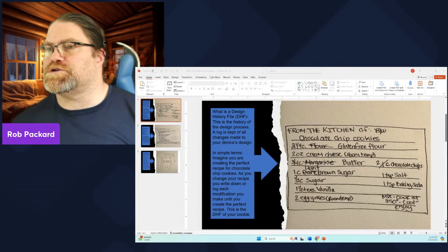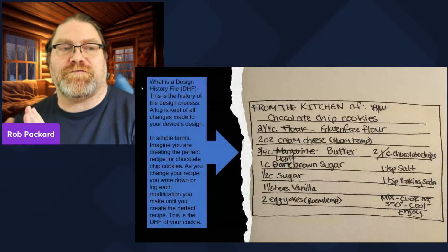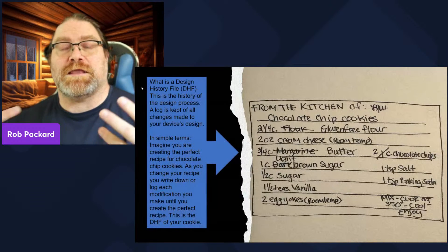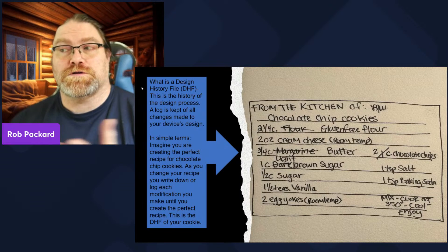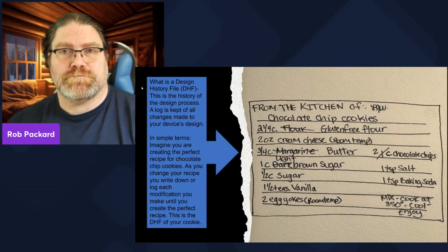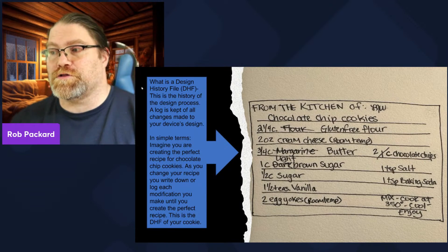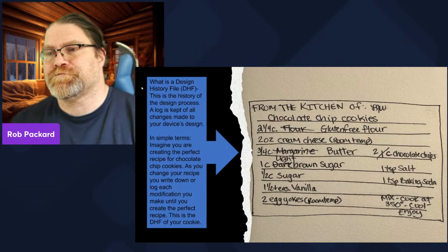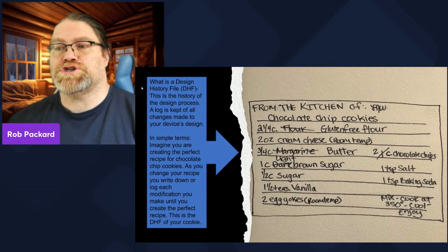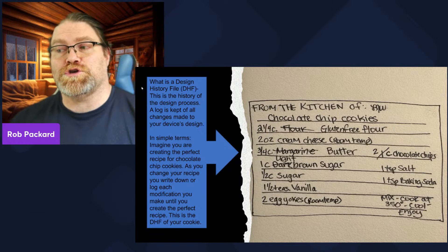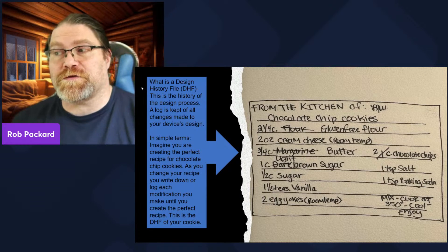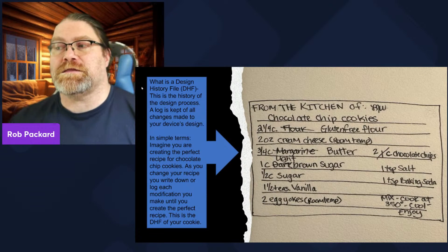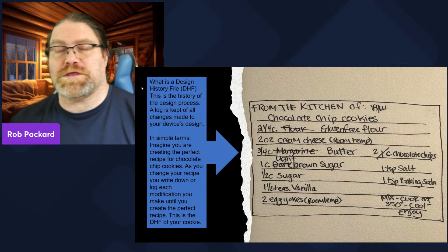Here is our first example, which is of a design history file. Compliments of Lindsay Walker, she created a recipe for chocolate chip cookies. Both of us are gluten-free, so her recipe is gluten-free. This recipe shows the history of changes that she made — over time she was tweaking her recipe on how to make the perfect chocolate chip cookie, and she's got changes as she went along.